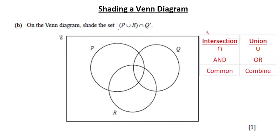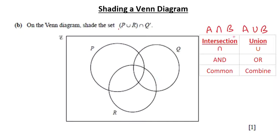For example, if we have two sets A and B and we're interested in their intersection, the keyword is 'and' — we're looking for things that are both in A and in B, so we're looking for common things between A and B. Similarly, if we're interested in their union, the keyword is 'or', which means at least one of the two conditions has to be met — something has to be at least in A or in B to be part of the union. In union, we combine both things.